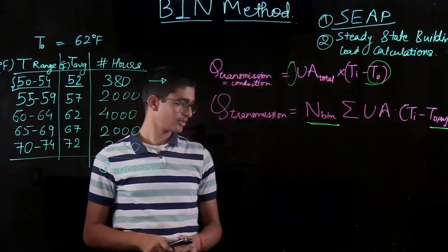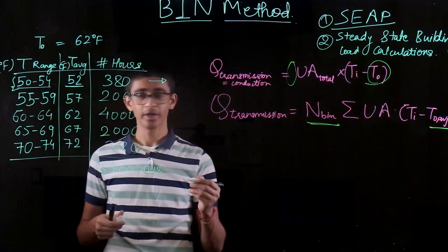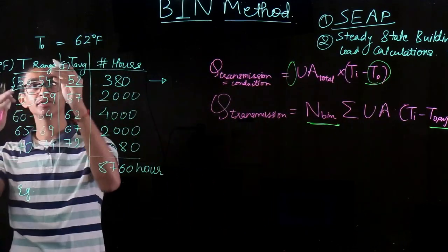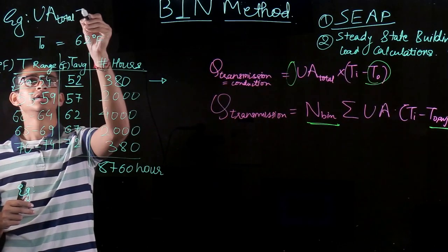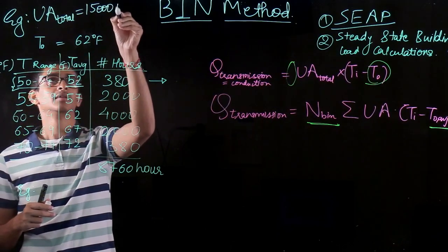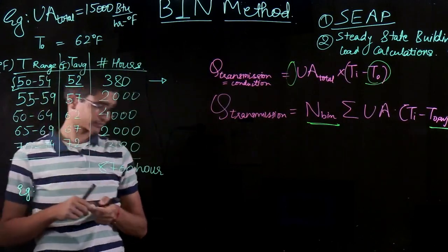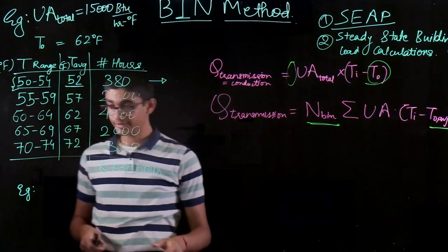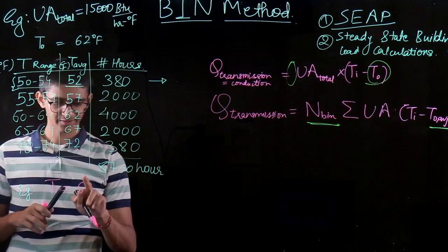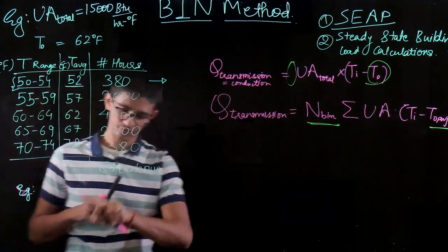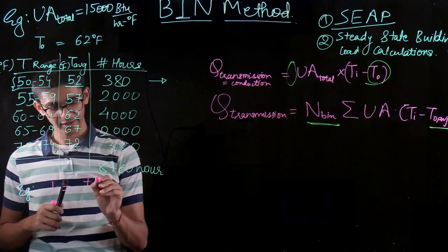Let's take a numerical example using the same values. Let's say UA_total = 15,000 BTU per hour per degree Fahrenheit. The internal comfort temperature T_in = 75°F. As of now, let's assume we want a constant internal comfort temperature of 75°F throughout the year.